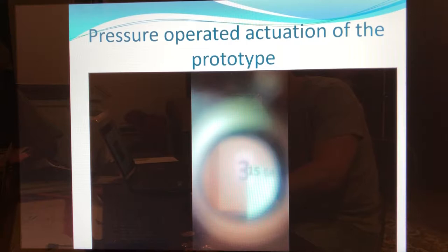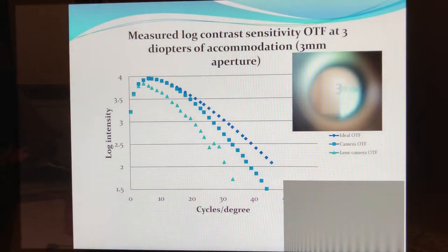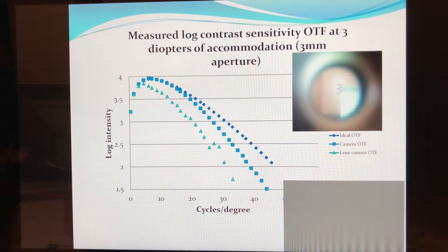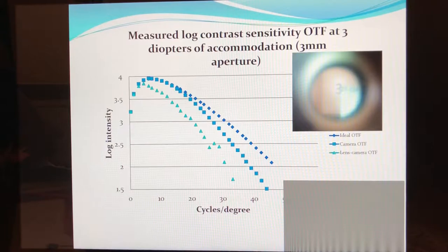We now have a concept, first-order design, and a working prototype. The image quality of the prototype was measured by a motion contrast sensitivity corrected optical transfer function, from which the visual Strehl ratio was calculated. This is a singular value that describes the optical quality of the image produced on the retina. A well-corrected lens has a visual Strehl ratio of about 0.8.